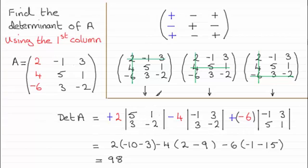So for the element 2 you can see it's 5, 1, 3, minus 2. Okay for the element 4 it's minus 1, 3, 3, minus 2. And for the element minus 6 it's minus 1, 3, 5, 1.